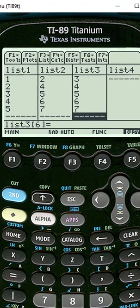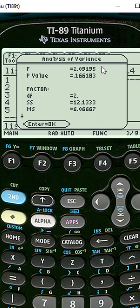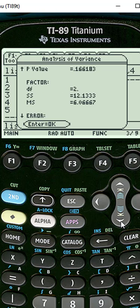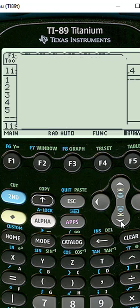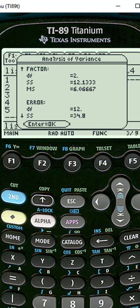It's working and it will give me a pop-up window here. My F test statistic is 2.09. My p-value is 0.166, and I have all the rest of the stuff that we get out of the ANOVA output as well. That's how to run ANOVA on the TI-89.